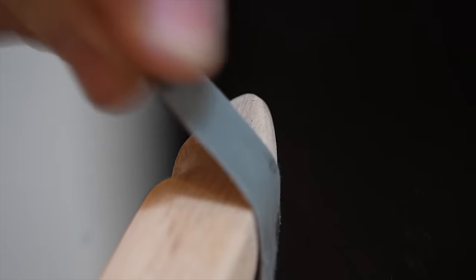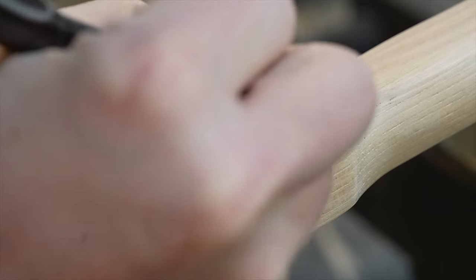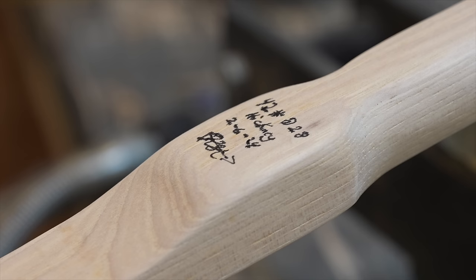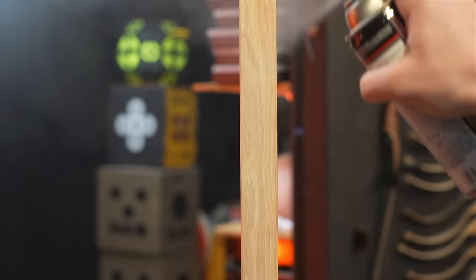So we're going to shape the tip overlays and sand the bow down, write some information on the bow, and give it a nice little finish. I used a spray polyurethane, but you can use whatever you would like for the finish.